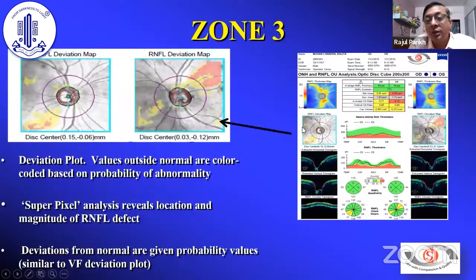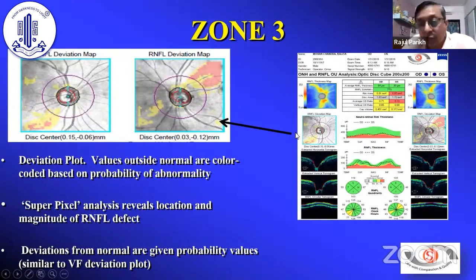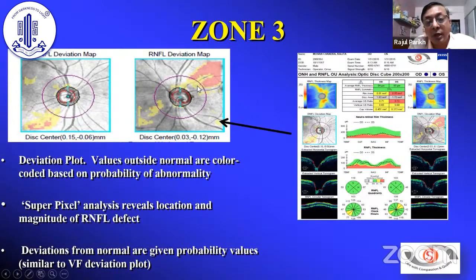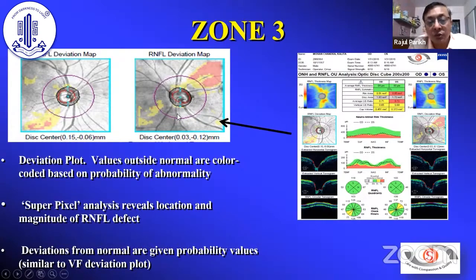Zone 3 is the deviation plot — a superpixel analysis where the magnitude of the RNFL defect is analyzed. Here, the darker the color, the more abnormal the value. Red usually points to less than the 1st percentile; yellow is the 5th percentile.